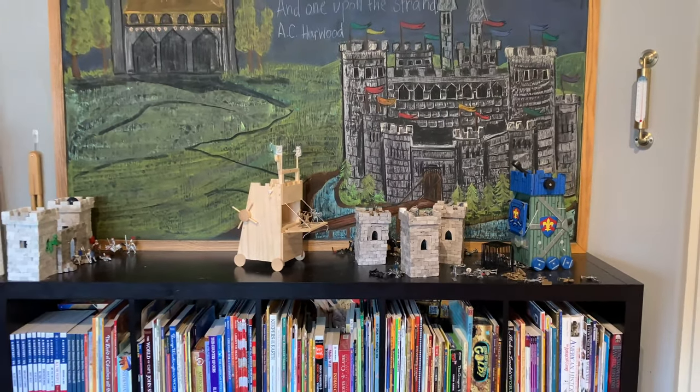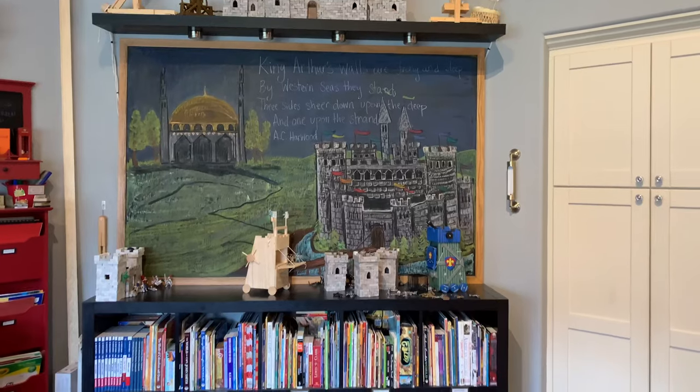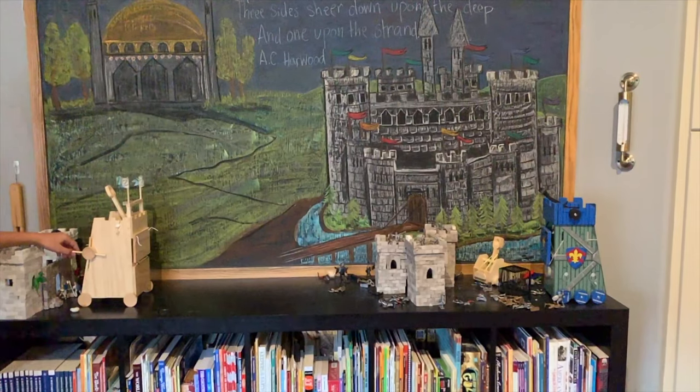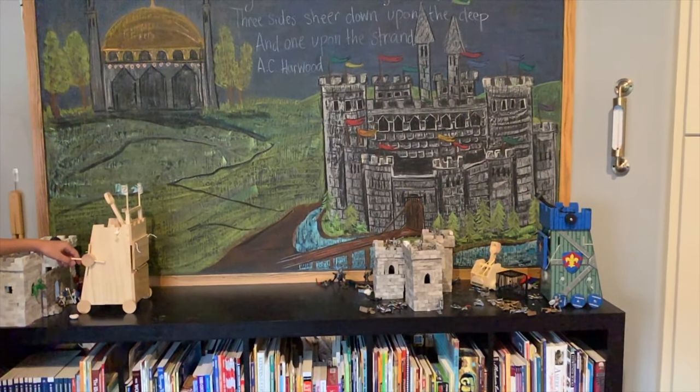So we've got this set up in our school room and you can see our chalkboard in the background and some of the other projects that we've been working on for this middle ages unit but now comes the fun part and that's when we get to launch the catapult and destroy our castle and that army.